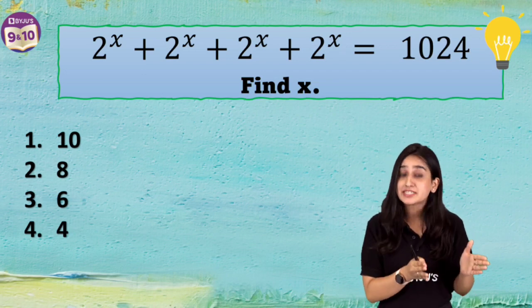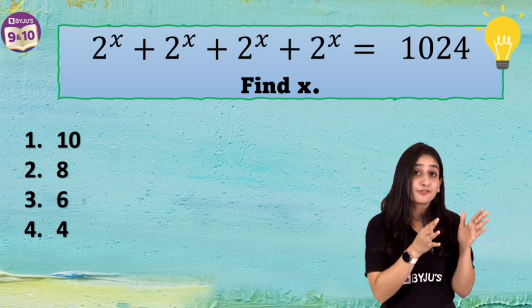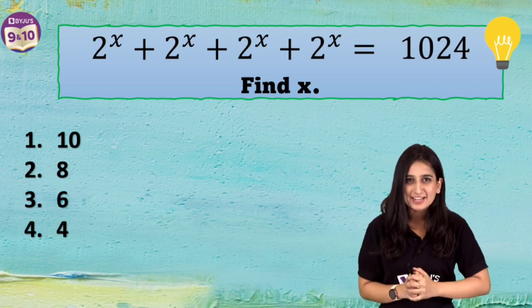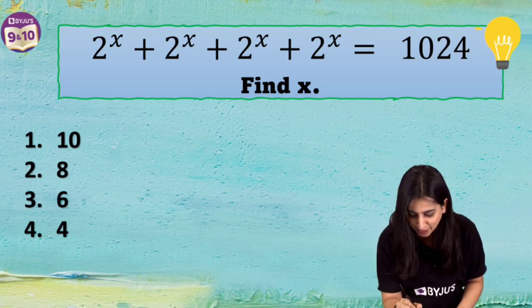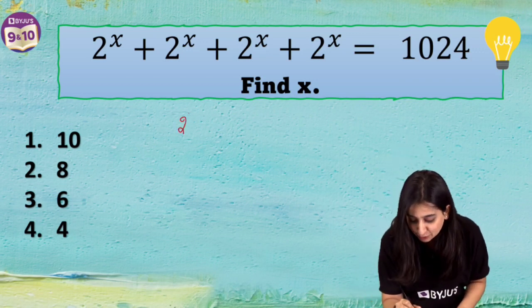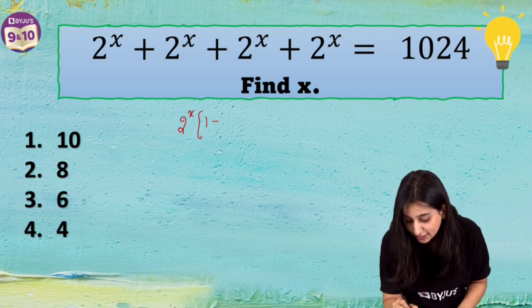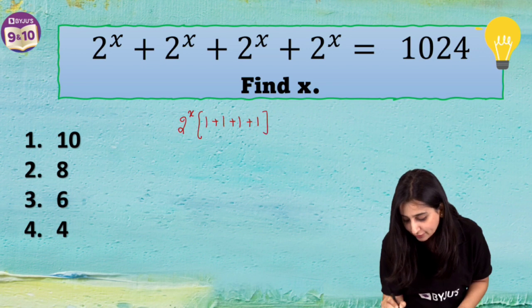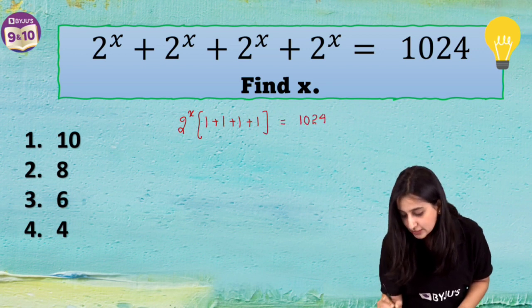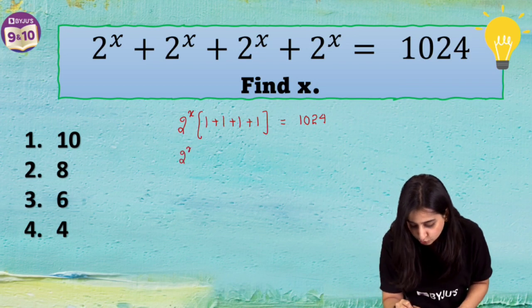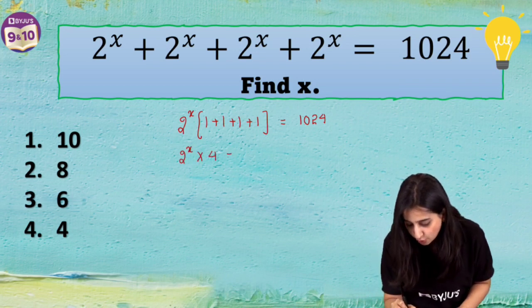On the left hand side, if you see there are four identical terms, so can I take 2 to the power x common? Of course we can do that. So I'm taking 2 to the power x common — what will I get? I will get 1 plus 1 plus 1 plus 1 on the left hand side, and on the right hand side we have 1024. So what we get on the left hand side is 2 to the power x multiplied by 4 equals 1024.